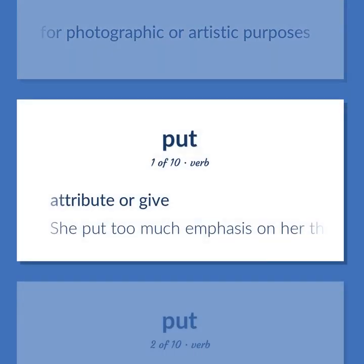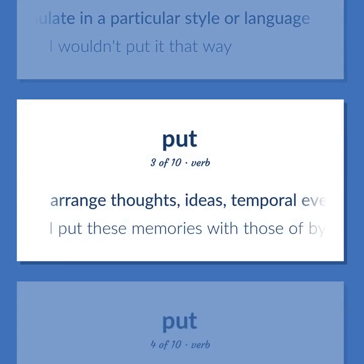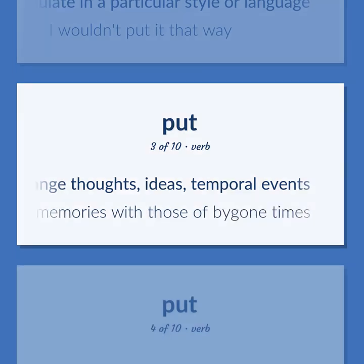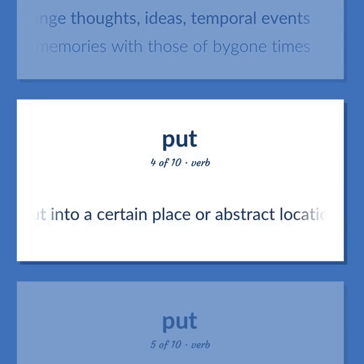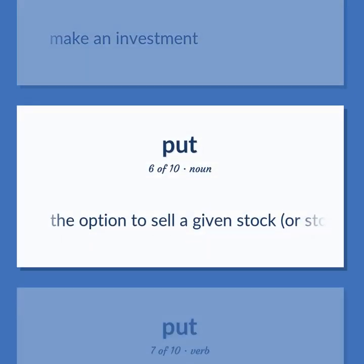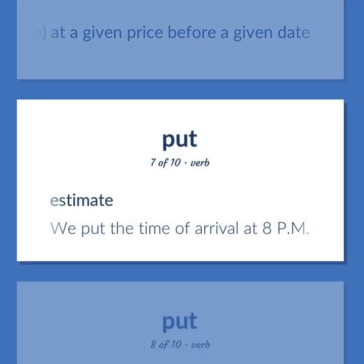Put. Attribute or give. Example: She put too much emphasis on her last statement. Formulate in a particular style or language. Example: I wouldn't put it that way. Arrange thoughts, ideas, temporal events. Example: I put these memories with those of bygone times. Put into a certain place or abstract location. Make an investment. The option to sell a given stock or stock index or commodity future at a given price before a given date. Estimate. Example: We put the time of arrival at 8pm.